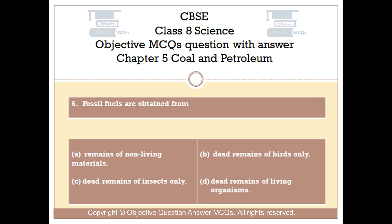Question number 6. Fossil fuels are obtained from — Option A: Remains of non-living materials. Option B: Dead remains of birds only. Option C: Dead remains of insects only. Option D: Dead remains of living organisms.